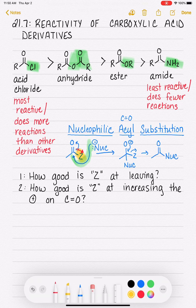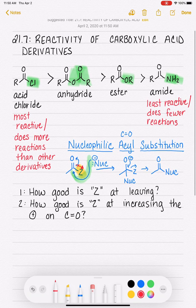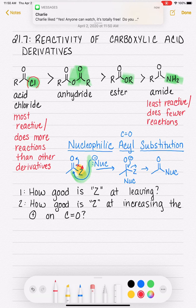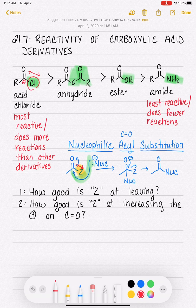Going back to our ranking of derivatives, the chlorine is very electronegative and is drawing electron density away from the carbonyl carbon, which increases the positivity of that carbonyl carbon, making it very reactive.